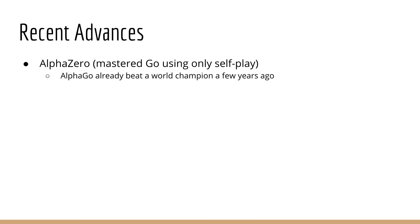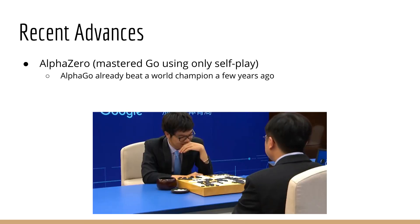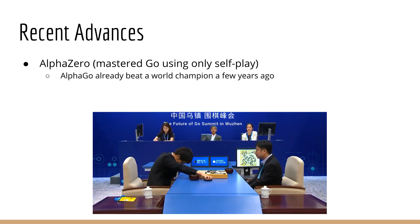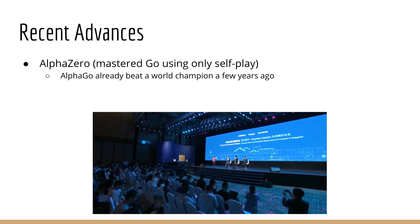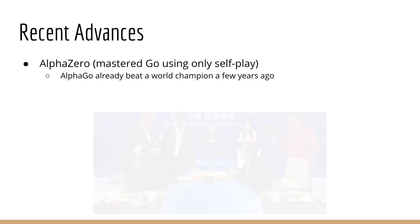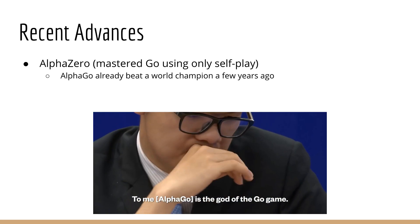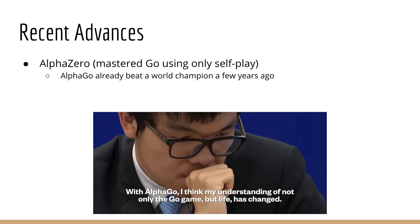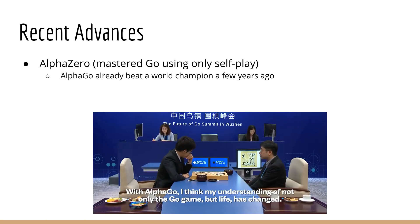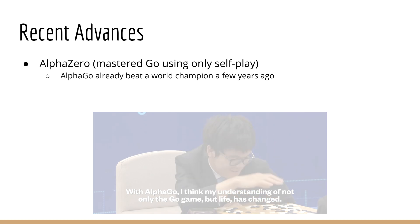Recently, these advances have allowed us to showcase just how powerful reinforcement learning can be. We've seen how AlphaZero can master the game of Go using only self-play, playing against itself. This is just a few years after the original AlphaGo, which already beat a world champion in Go.